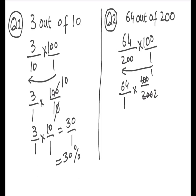Numerator multiplied by numerator and denominator multiplied by denominator: 64 times 1 is 64, and 1 times 2 is 2. You can then simplify 64 over 2 by basic division: 2 goes 3 times into 6, and 2 goes 2 times into 4. So your answer is 32%.